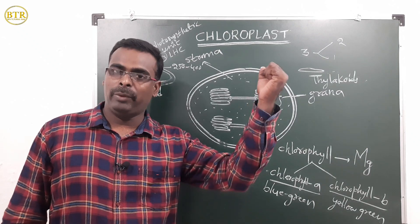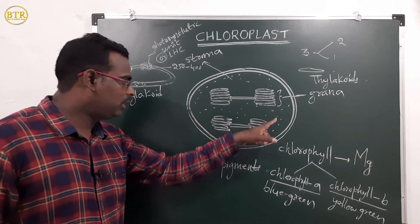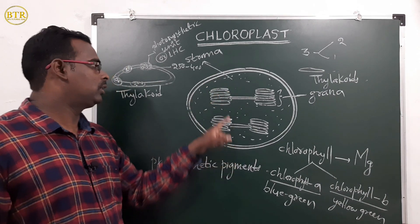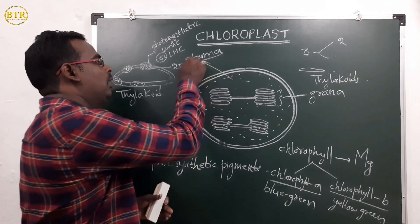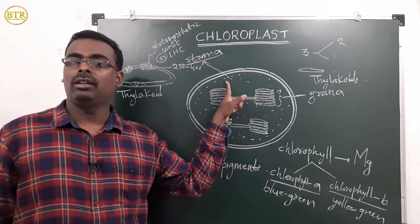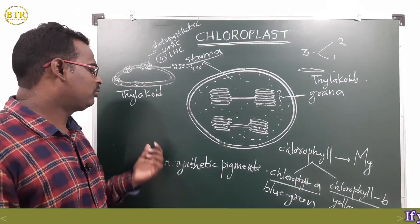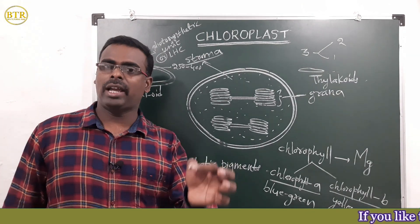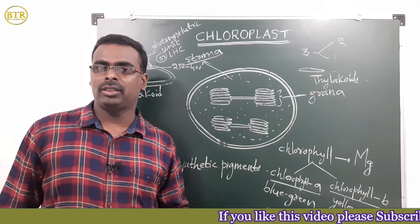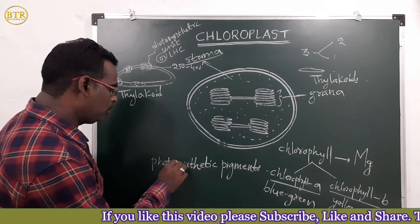Grana is the site of trapping solar energy for photosynthesis. The inner space of the chloroplast is filled with a fluid called stroma. Light reaction occurs in the grana; dark reaction takes place in the stroma. Many enzymes are present in the stroma. Substances in the thylakoid membrane that absorb light for photosynthesis are called photosynthetic pigments.